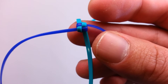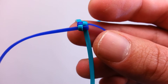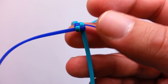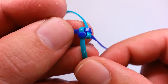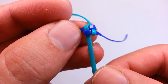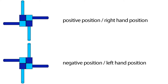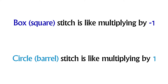Let's call the stitch where the string that points towards you is on the right a positive position, and the stitch where the string that points towards you is on the left a negative position. You can also call them left and right hand positions — right hand position for string on the right, and left hand position for string on the left.